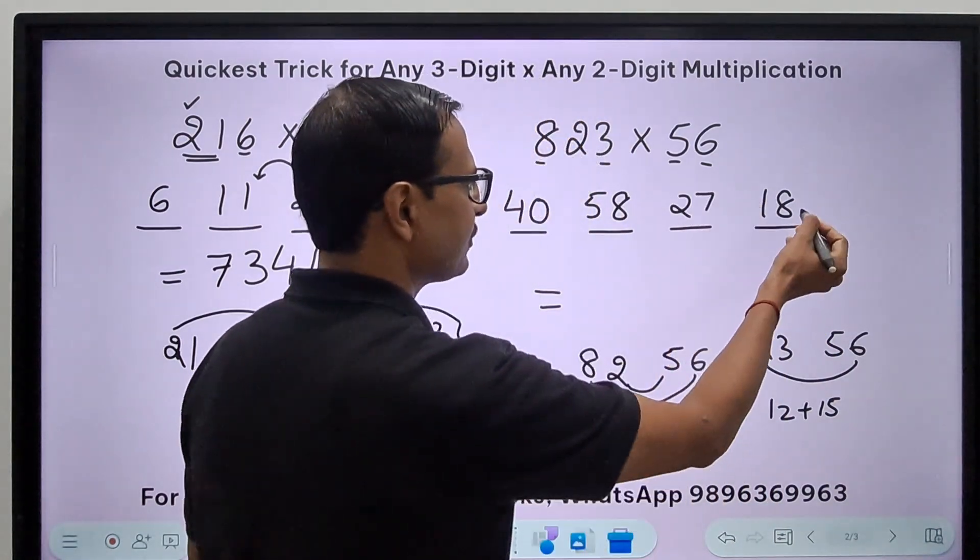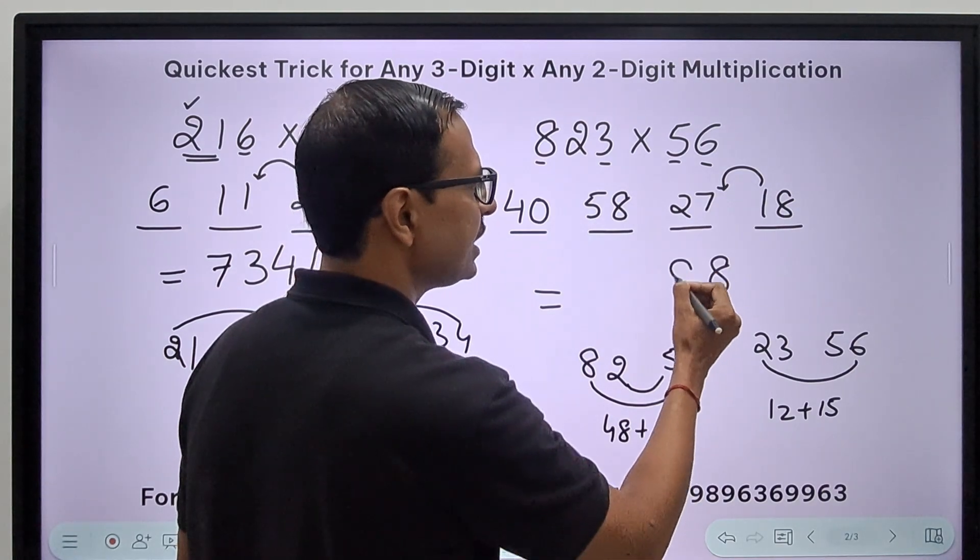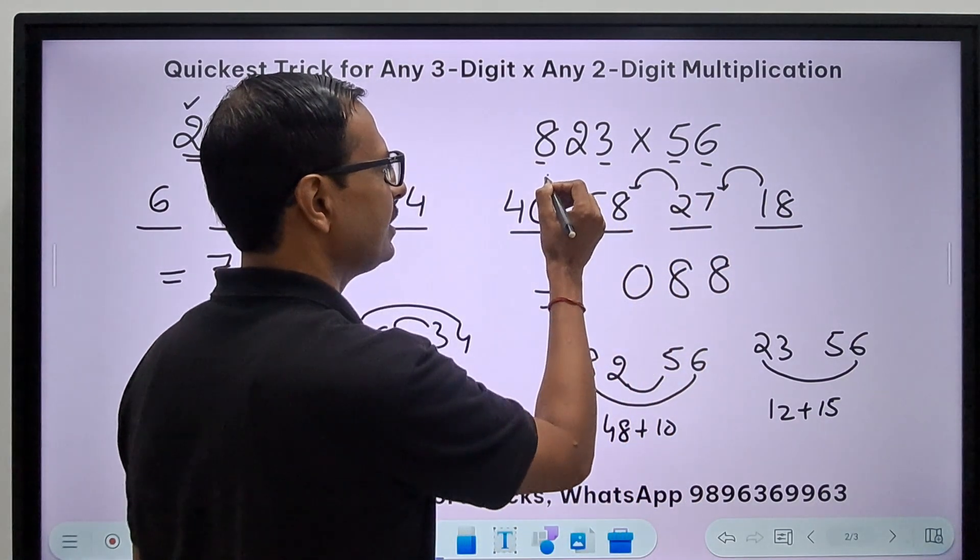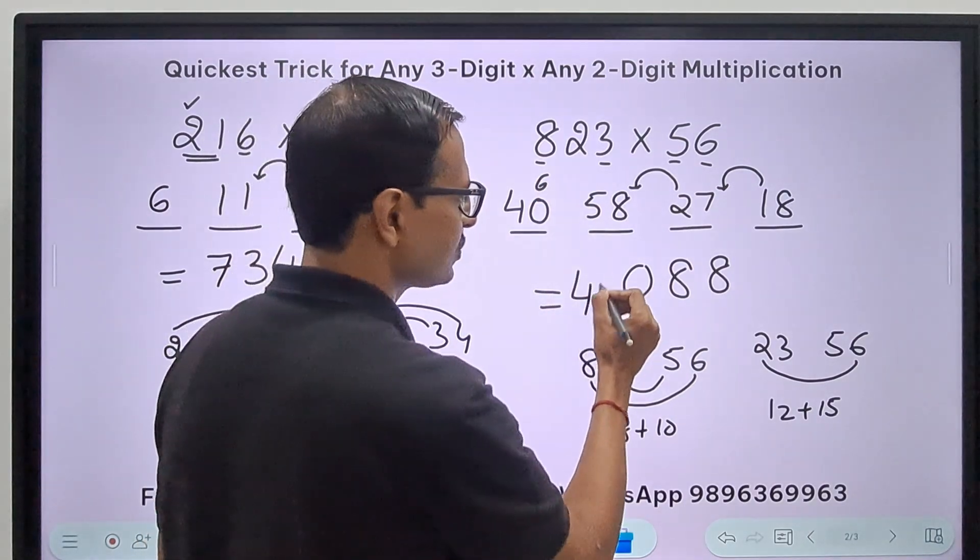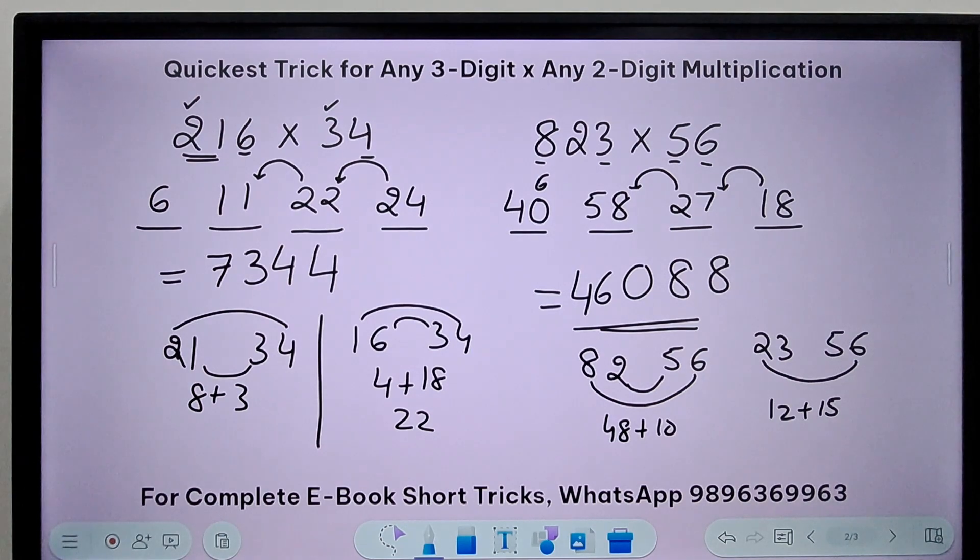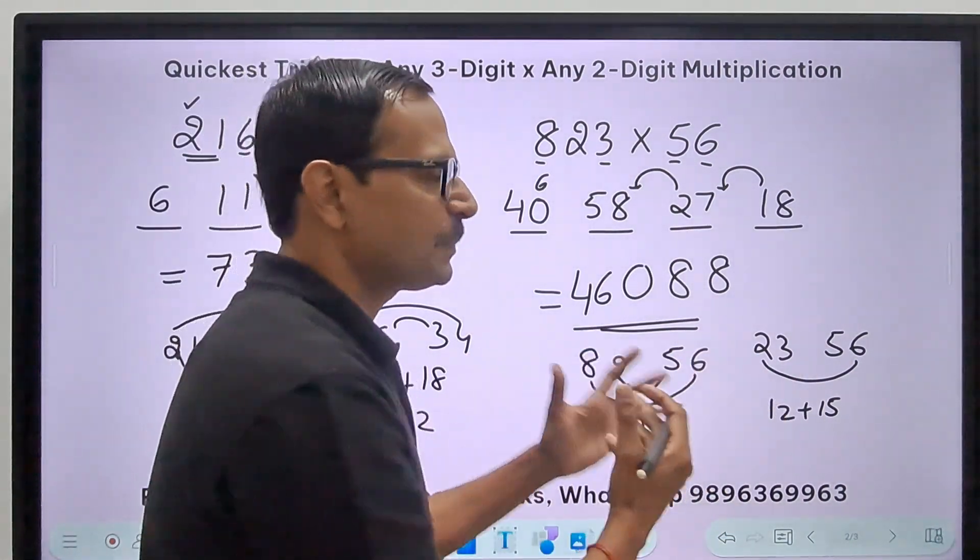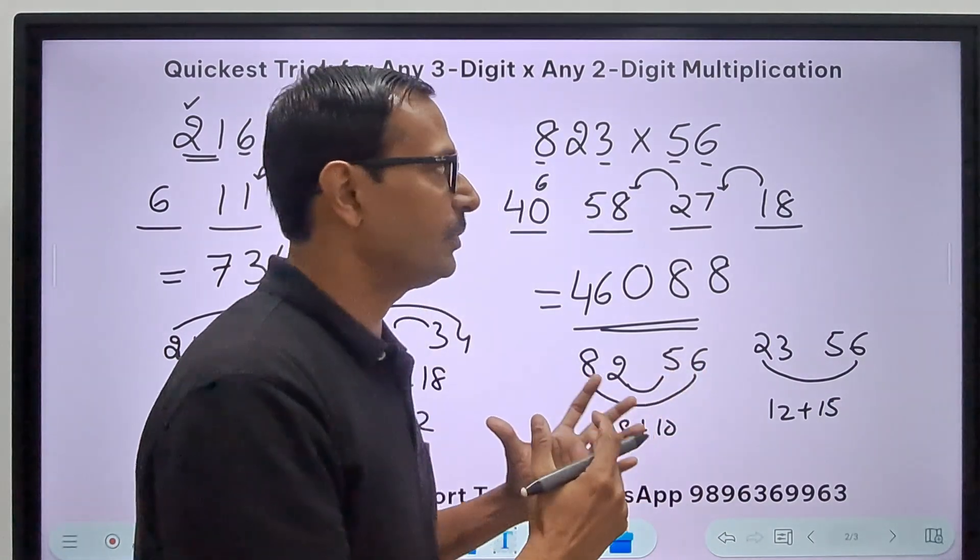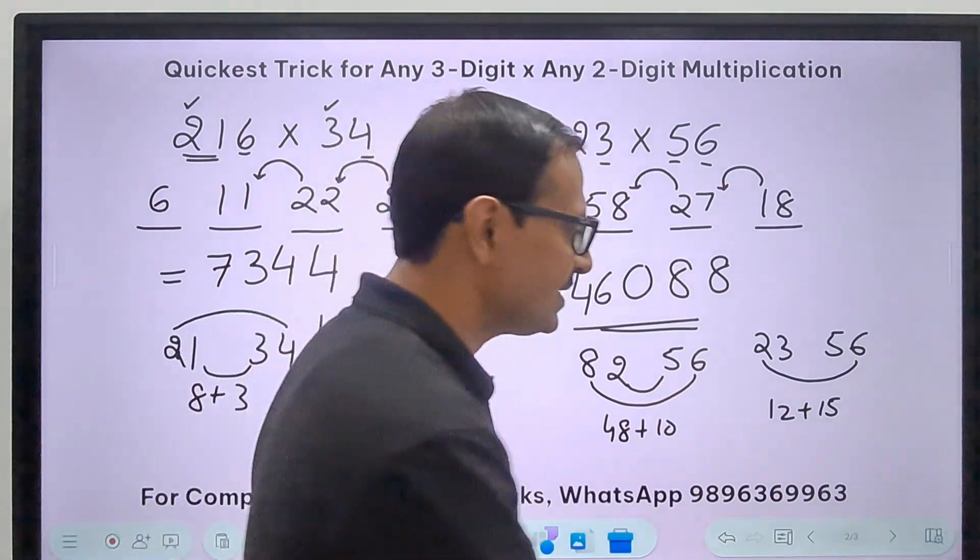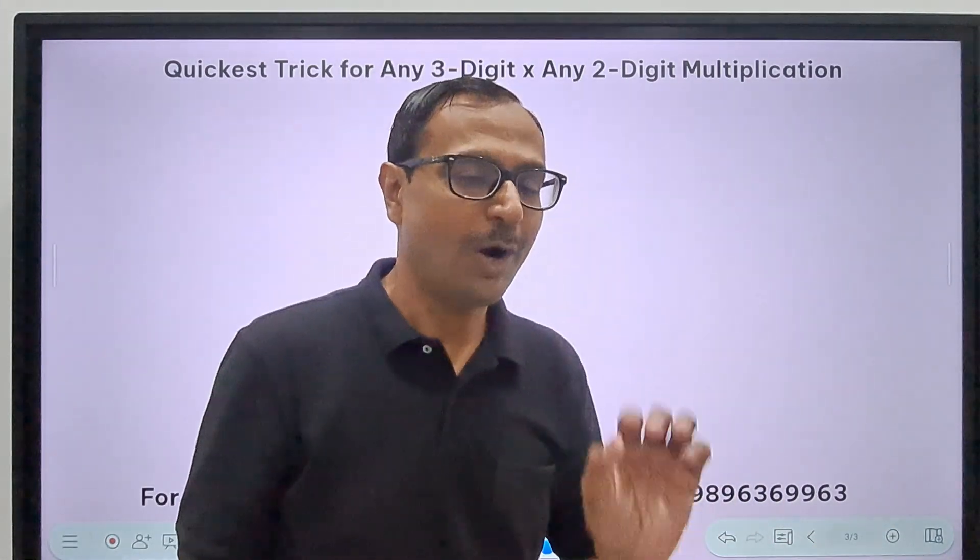This is going to be 12 plus 15, so this is 58 and this is 27. Let's start with the unit digit 8, 1 carry. So 28 means 8, 2 carry. 60 means 0 and a 6 carry. 46, so 46088 is the product of the two numbers. Slowly we are building up the speed.